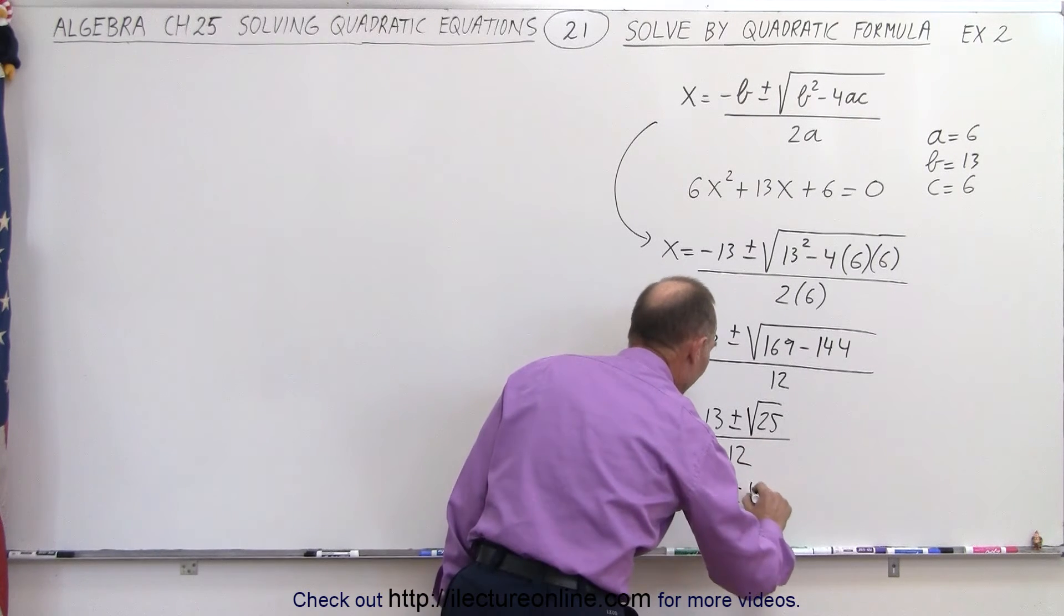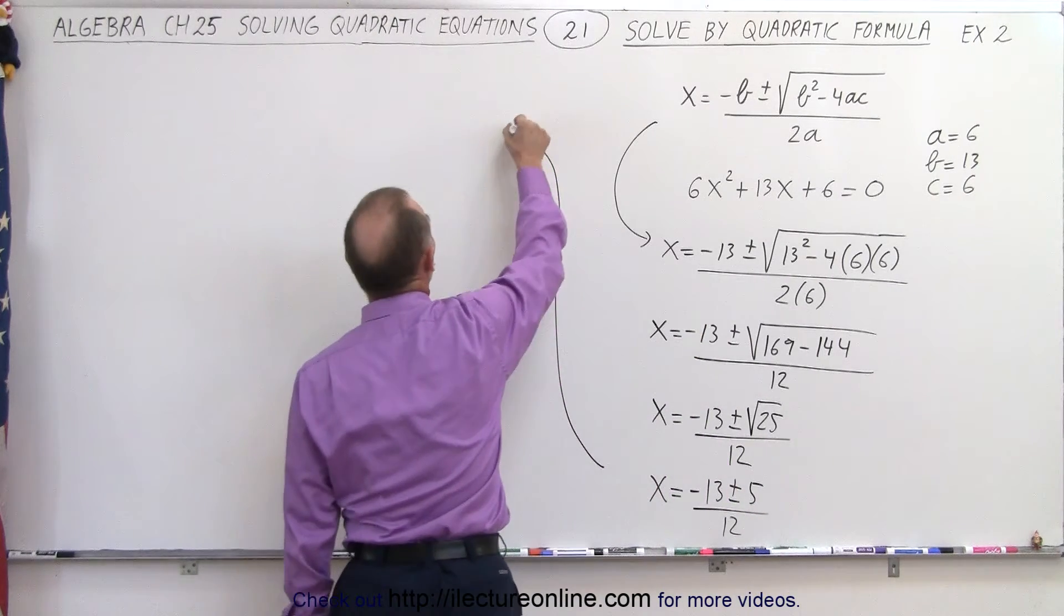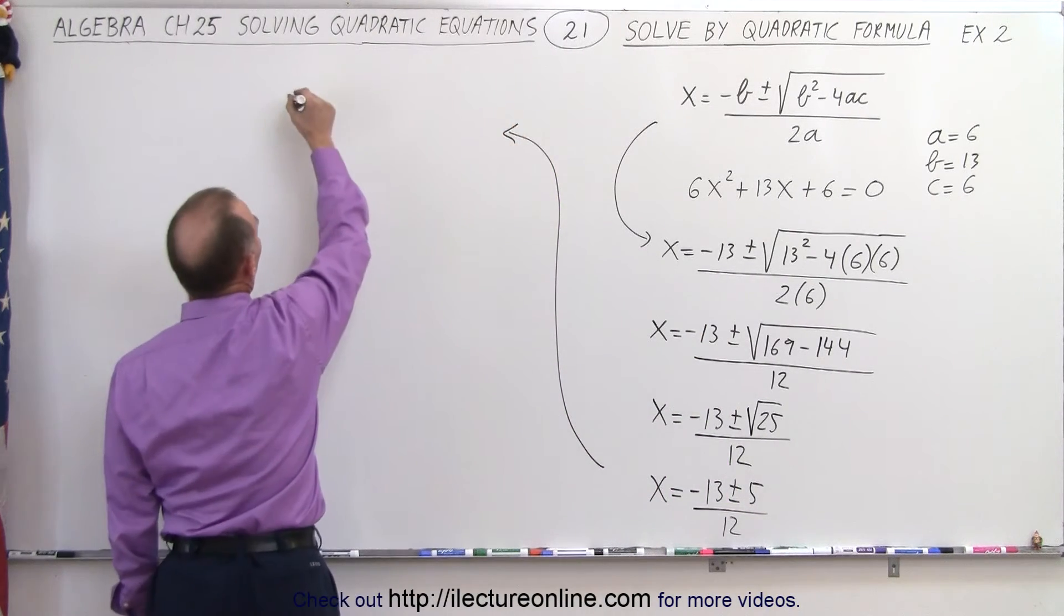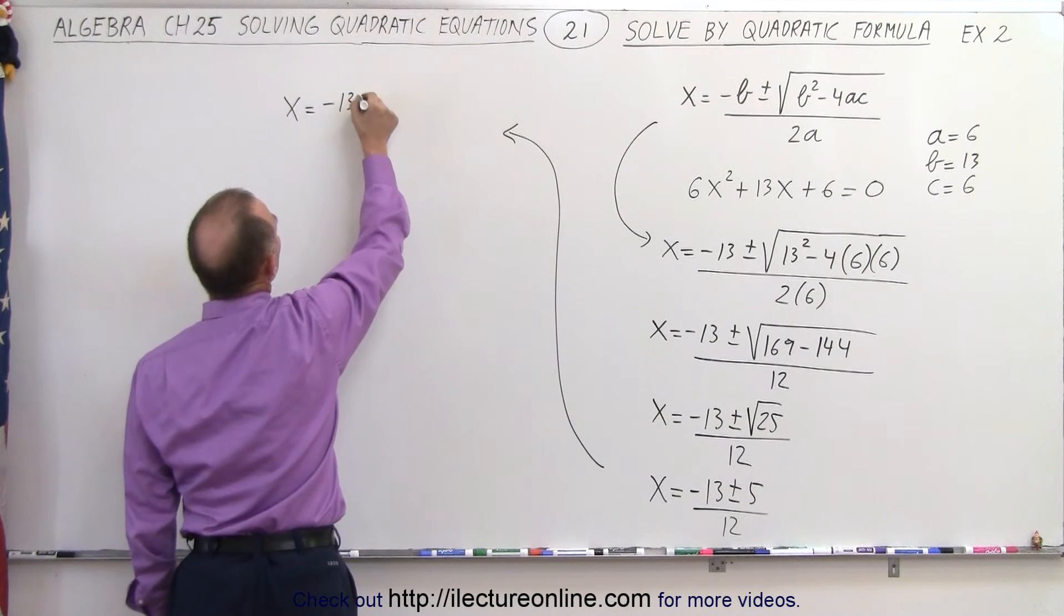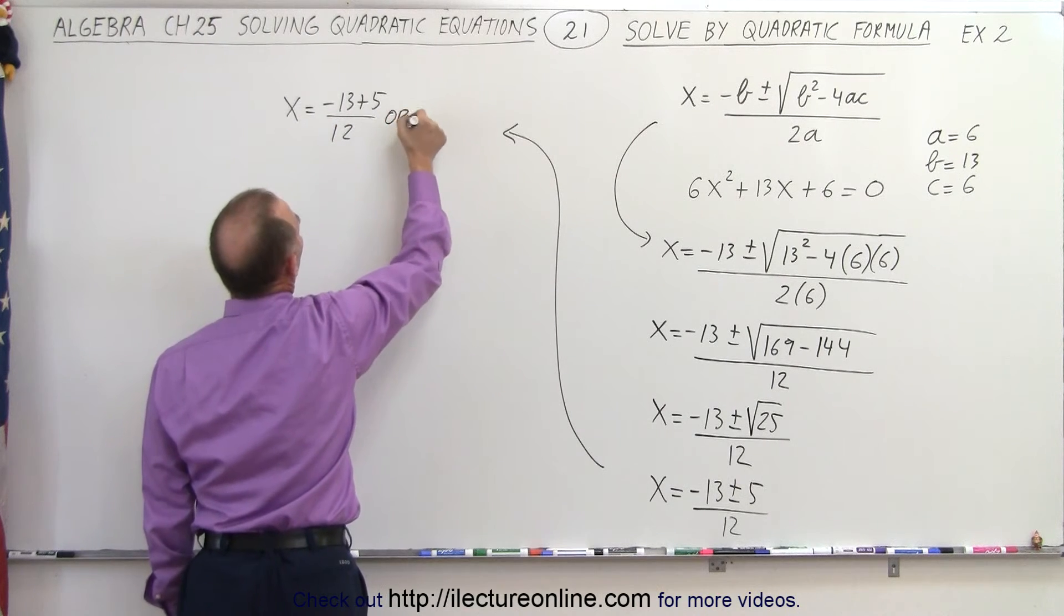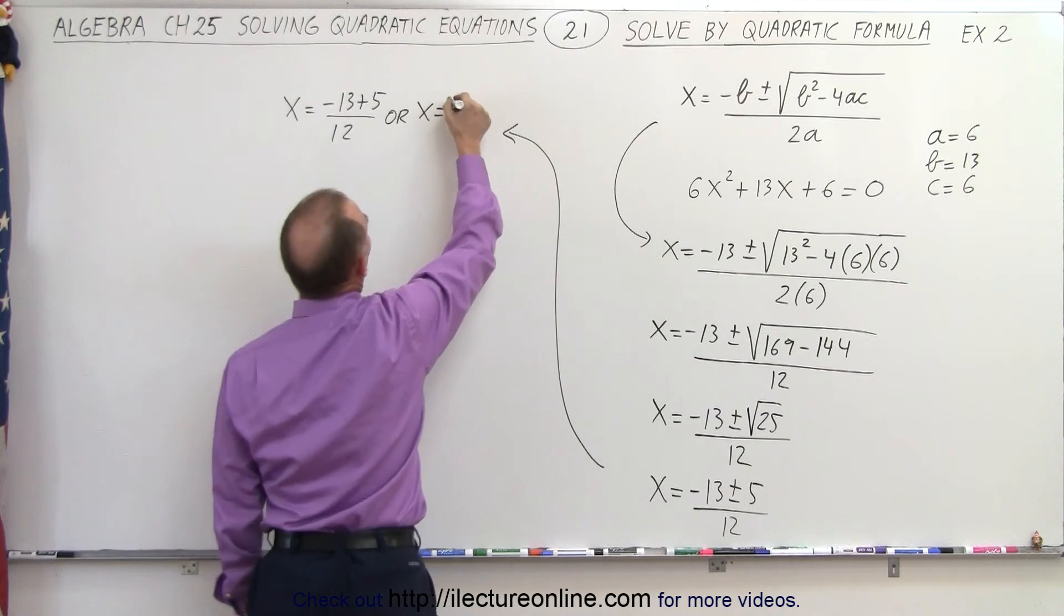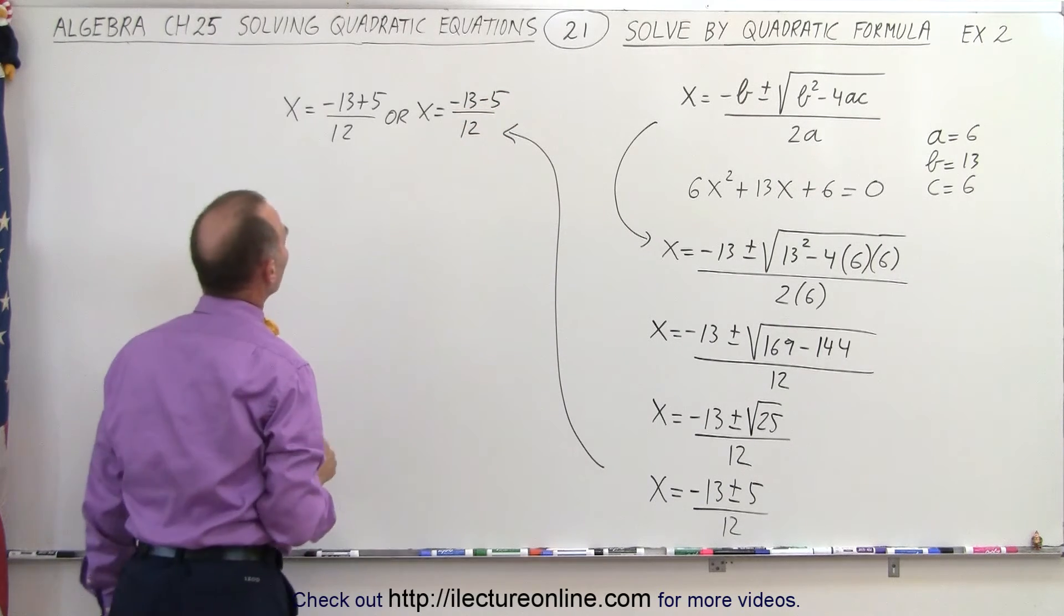That means that x is equal to minus 13 plus 5 over 12, or x is equal to minus 13 minus 5 over 12. So those are the two possible solutions.